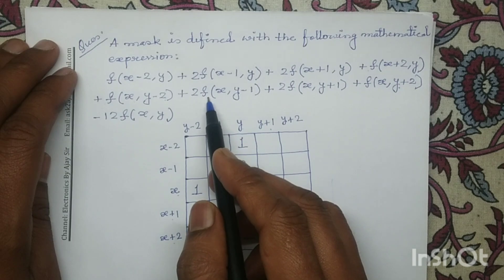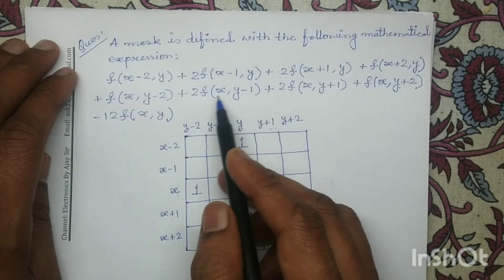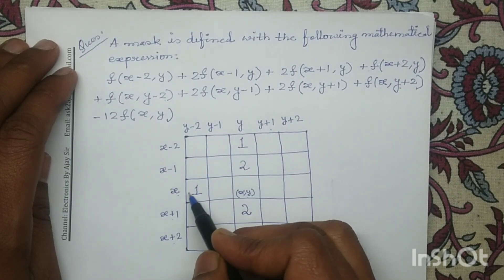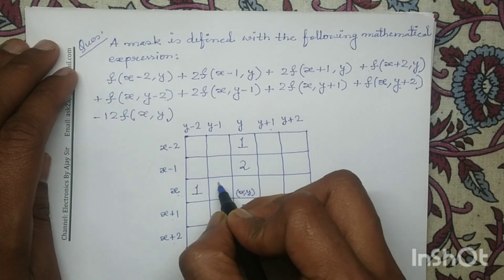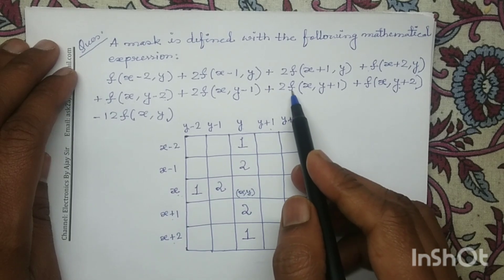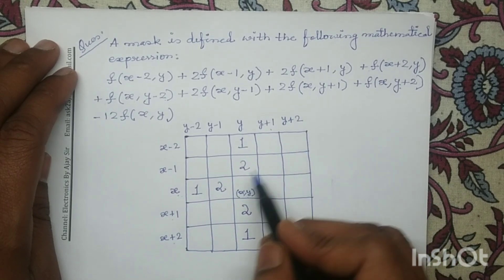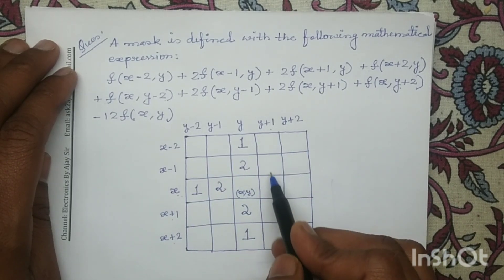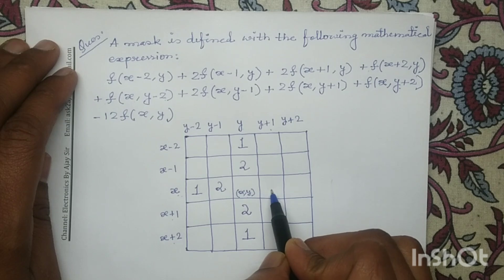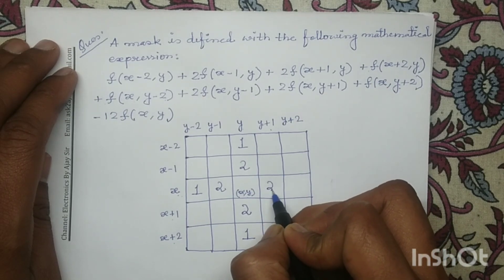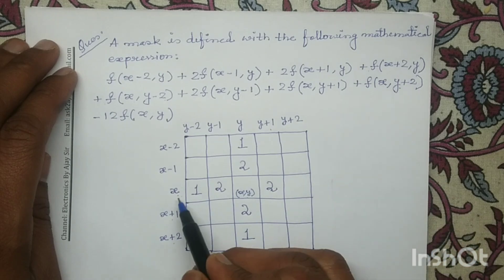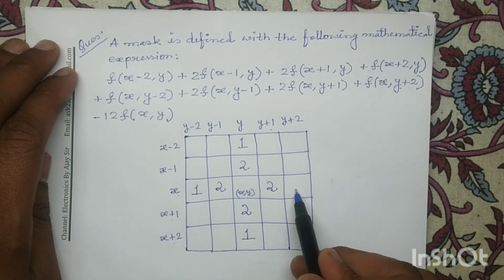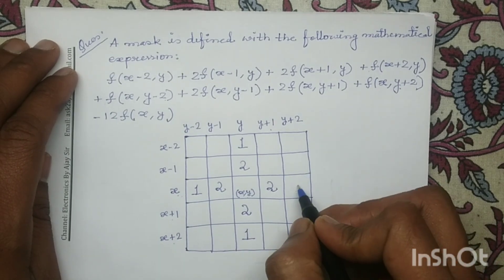Similarly, f(x, y-1) — the coefficient is 2 — f(x, y-1) represents this pixel and the coefficient is 2. f(x, y+1) represents this pixel and the coefficient here is 2. Next, f(x, y+2) represents this pixel and the coefficient here is 1.